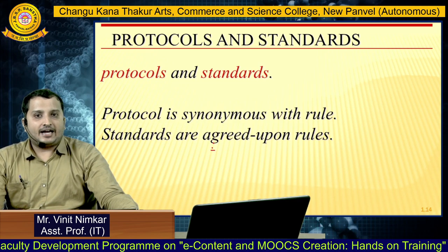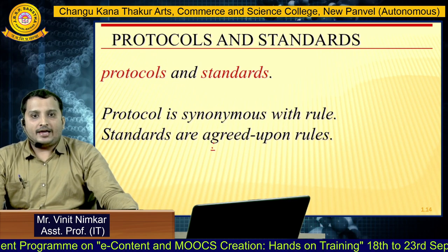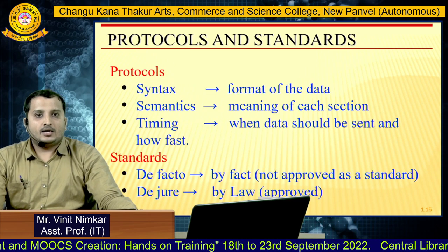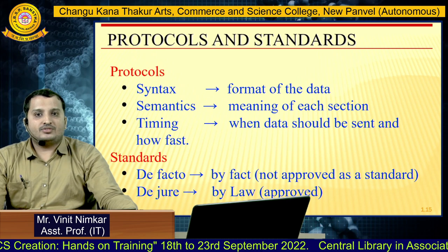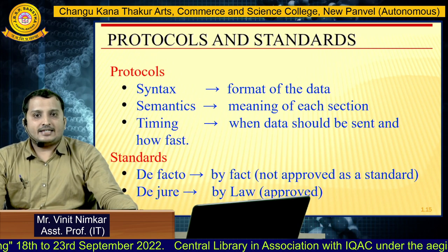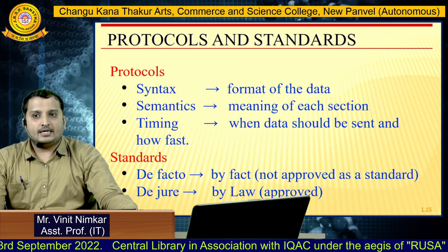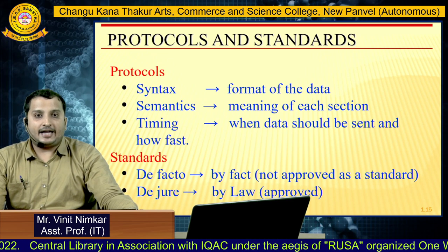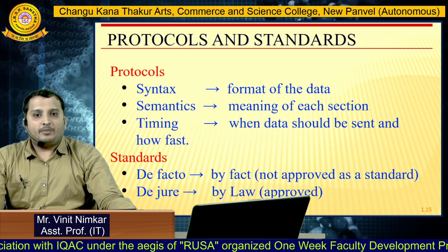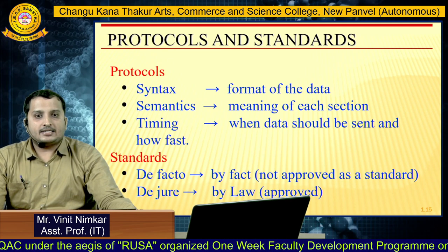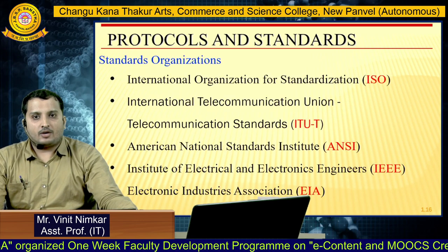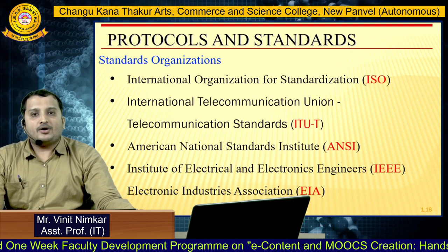Next, let's talk about protocols and standards, which was the fifth component we studied. Protocol is synonymous with rules. Standards are rules which are agreed upon. Protocols basically consist of three main parameters: syntax — how the format of the data should be; semantics — the meaning of each section; and timing — when data should be sent and how fast. Standards are of two types: de facto, which are not formally approved standards, and de jure, which are approved by local laws and government organizations.